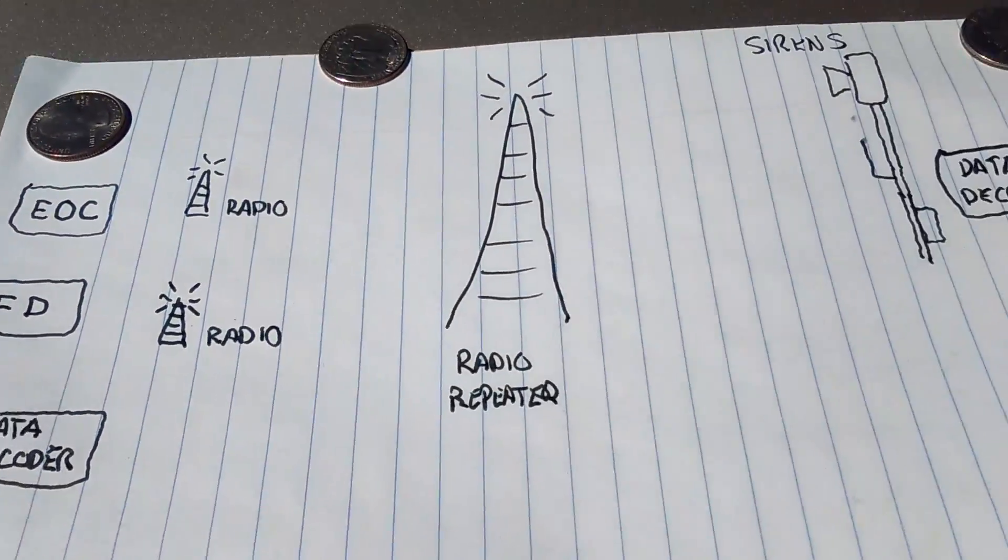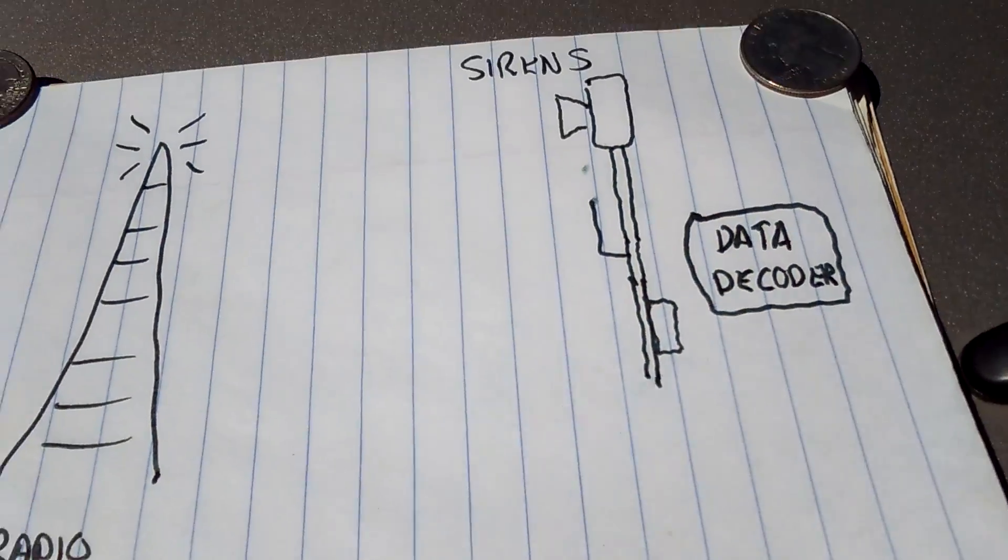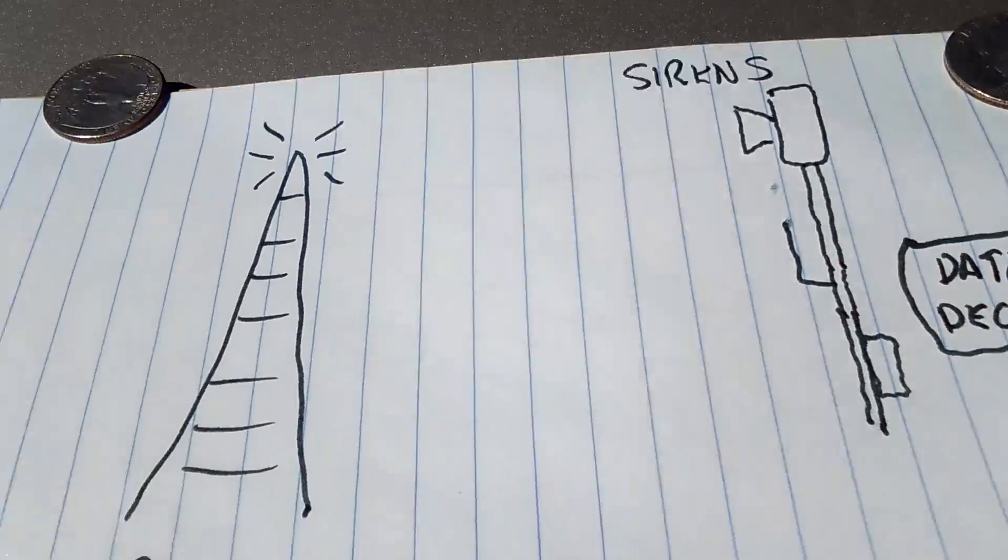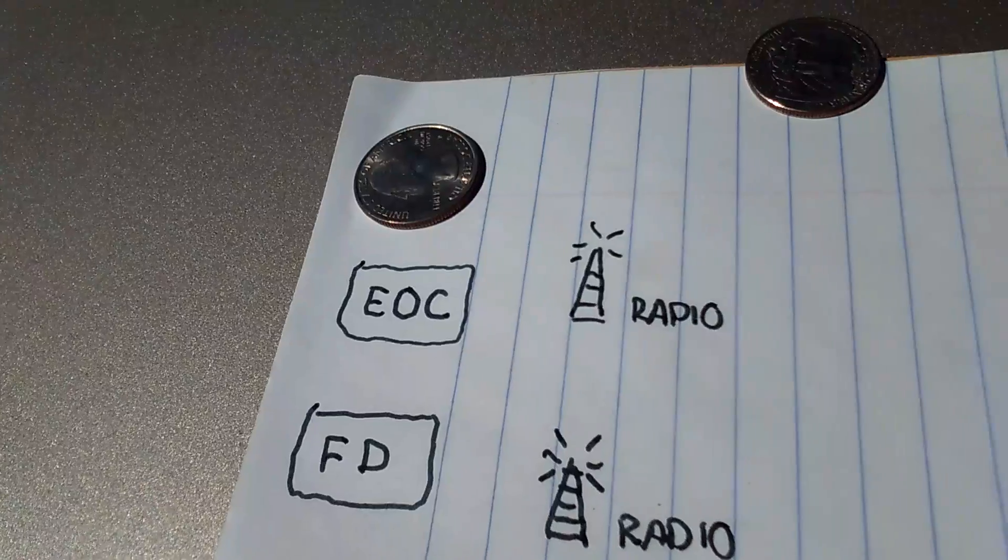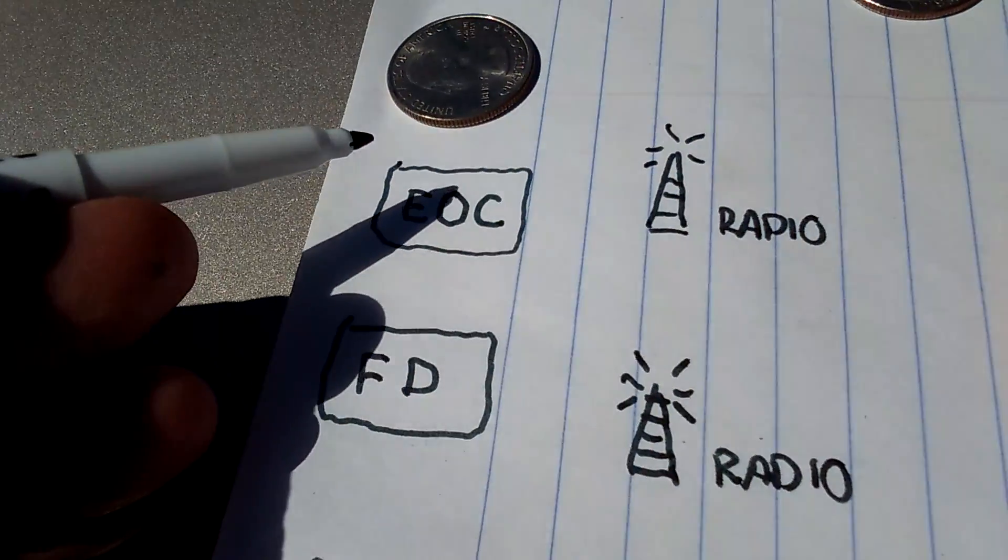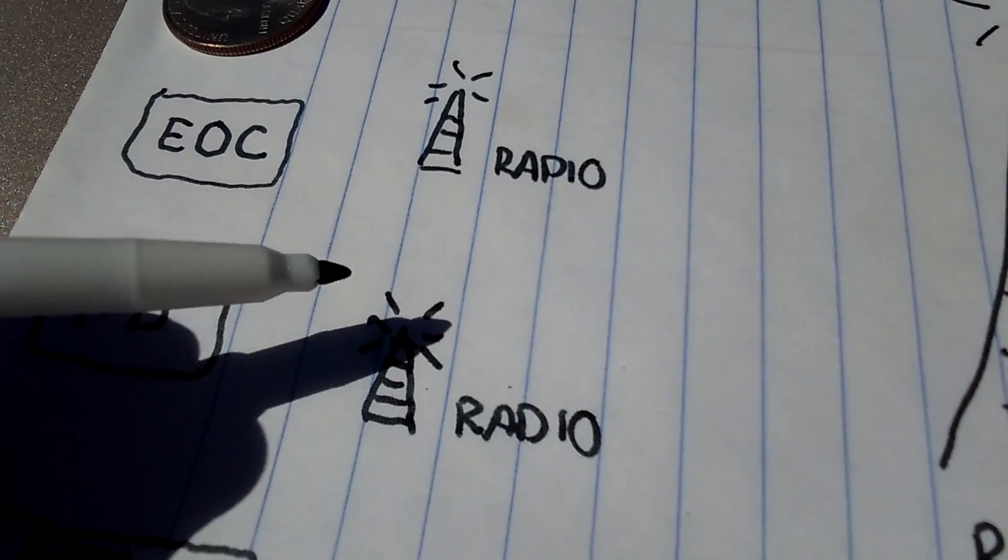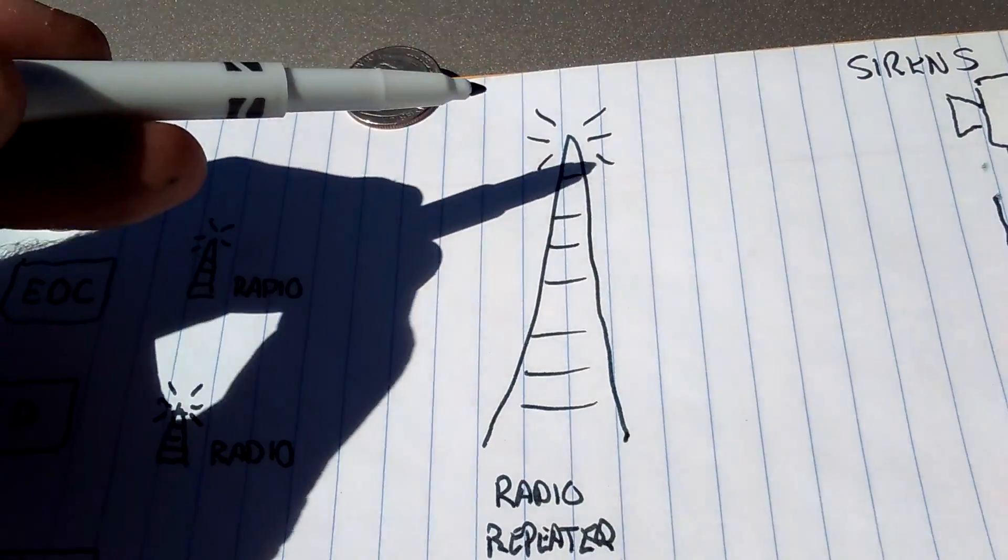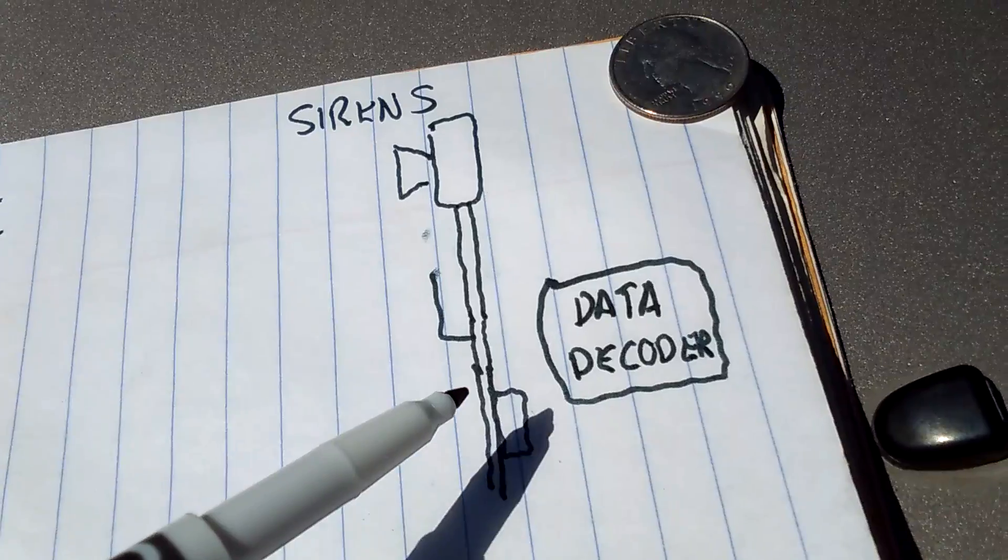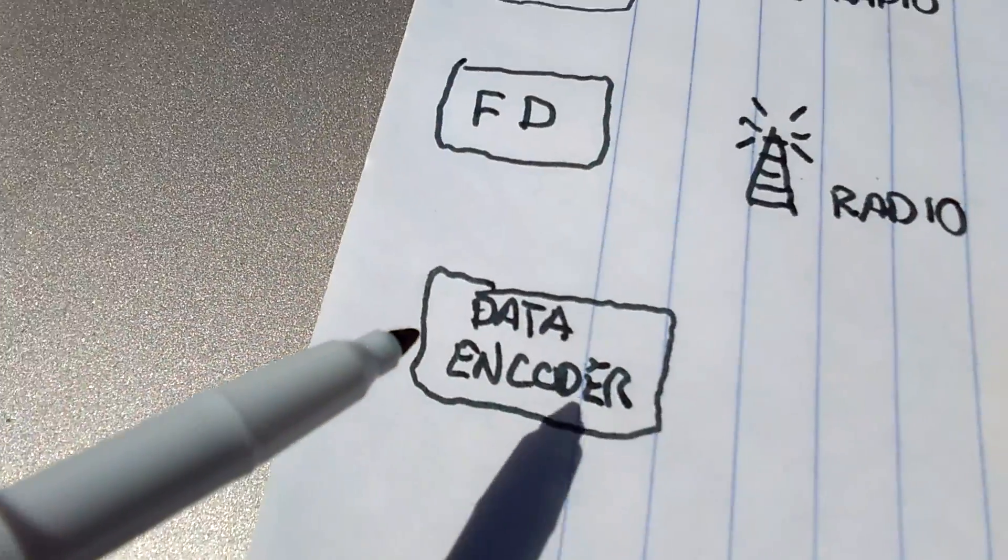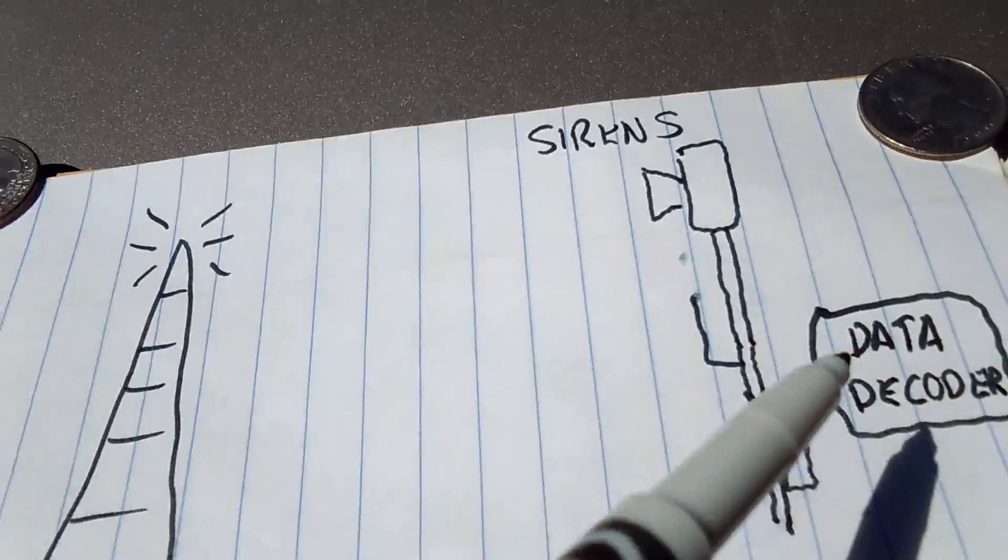The Dallas County siren system has sirens all over the city and probably most of the county that are controlled by a radio signal and tones that either originate from the emergency operation center or the fire department. When they need to activate the tones, the EOC or the fire department sends out a coded signal through radio and probably a repeater system that covers the entire county. On the sirens, there's an antenna and a radio and a data decoder that decodes the data stream that's sent by the fire department or the emergency operation center through the radio, through the repeater to all the sirens.